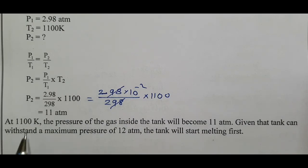At 1100 Kelvin, the pressure of the gas inside the tank will become 11 atm. Given that the tank can withstand a maximum pressure of 12 atm, the tank will start melting first instead of explode.